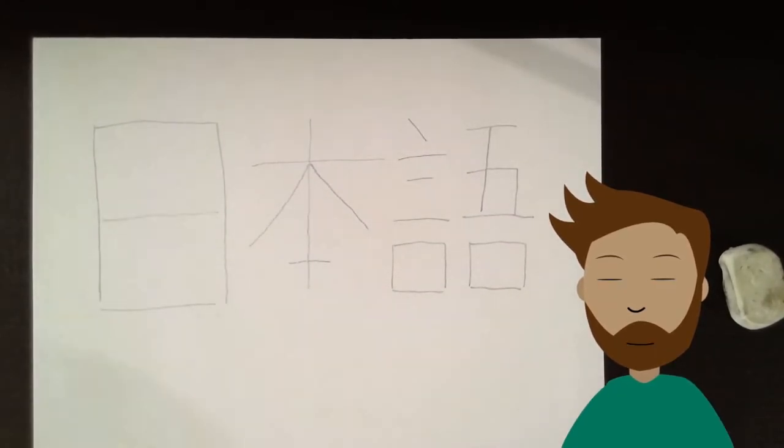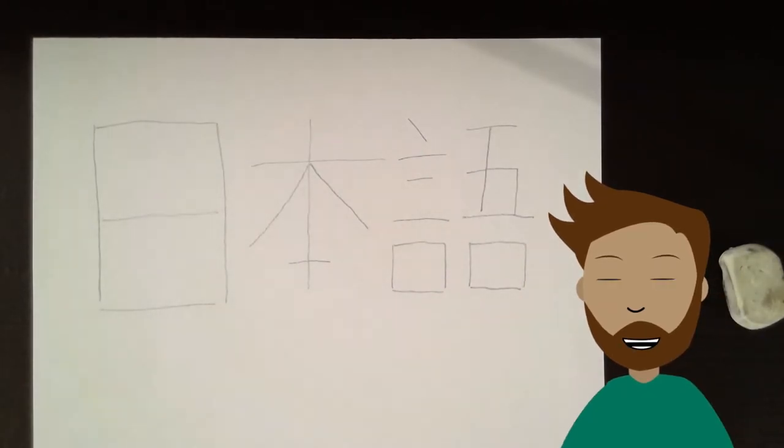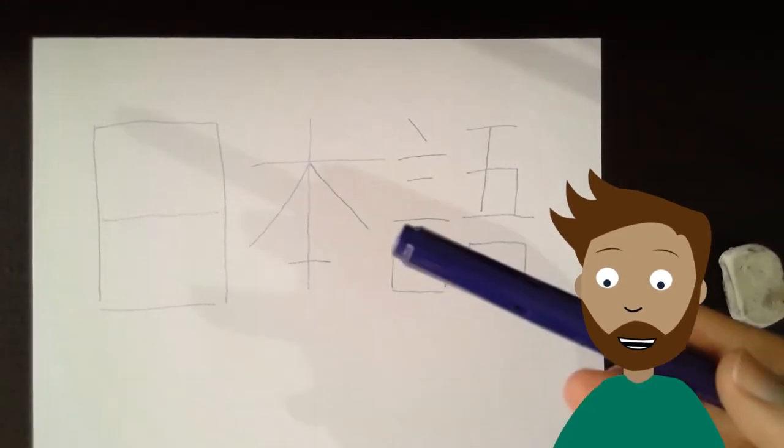When I put this Go Kanji character after Nihon, Japan, it turns into Nihongo. Japan plus language means Japanese language. Japanese.